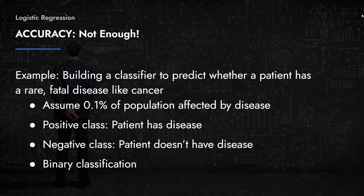Here's a great example of why: imagine you're building a classifier to predict whether a patient has a rare fatal disease like cancer. The keyword is that it's rare and fatal. Assume that 0.1% of the population is affected. The positive class is assigned to patients who have the disease, and the negative class to those who don't.